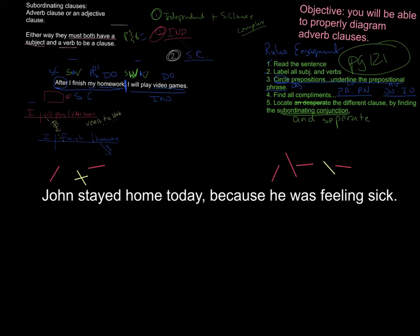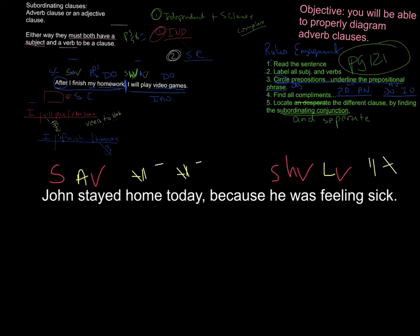What stayed? John stayed — there is no direct object. 'Home' is describing where he stayed and 'today' is describing when, so these are both adverbs. That was a tricky one. Now the back part: 'was feeling' — it's describing how he was feeling, so hopefully you labeled 'sick' as a predicate adjective. Now we separate the two clauses. Note that there should be no comma before 'because' — when the subordinating conjunction is in the middle of the sentence, you don't need a comma; you only need a comma when it's at the front. 'Because he was feeling sick' is the subordinating clause, and 'John stayed home today' is the independent clause.